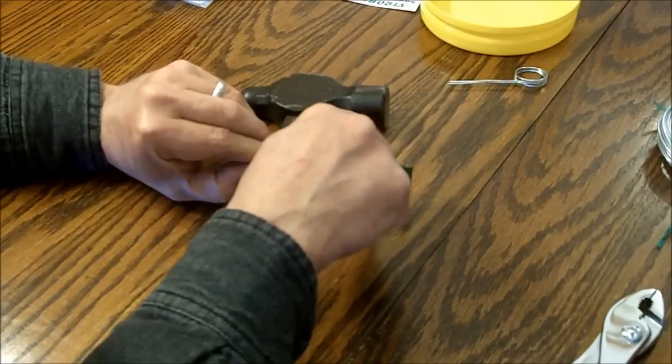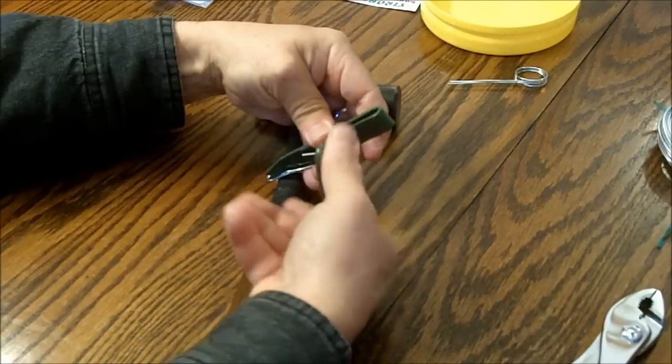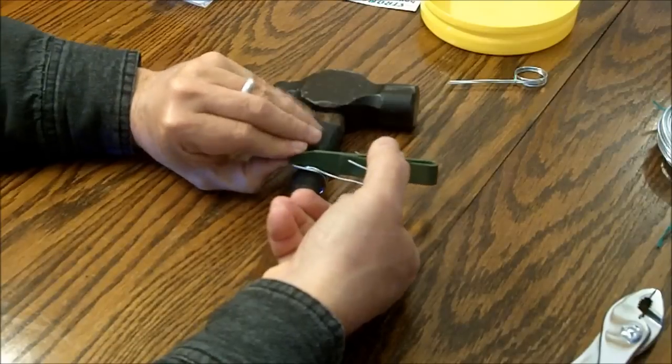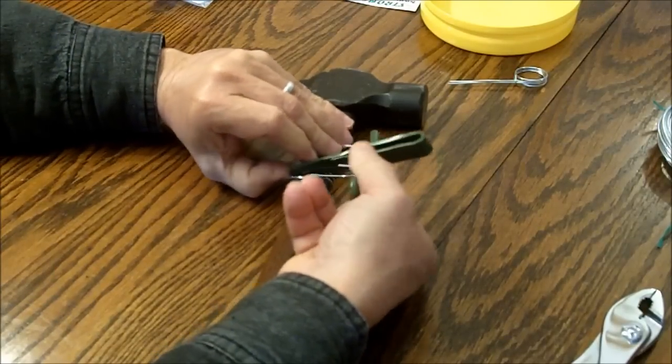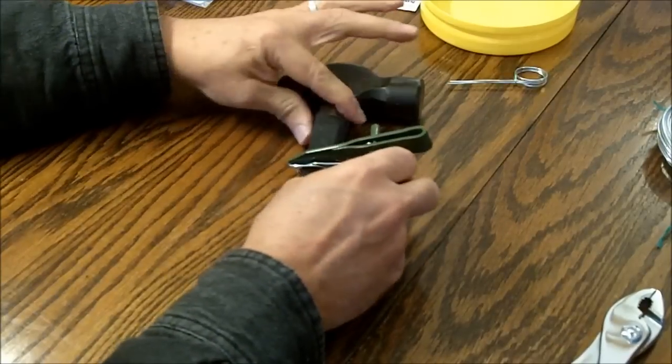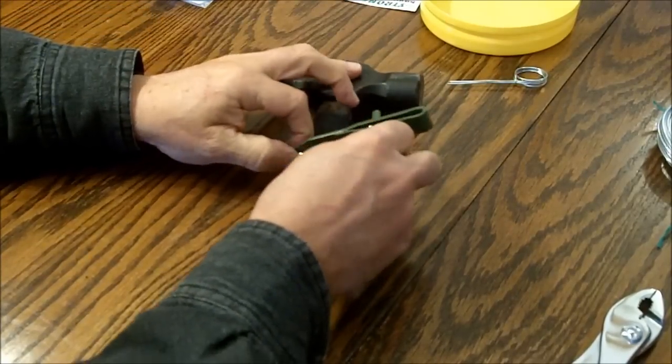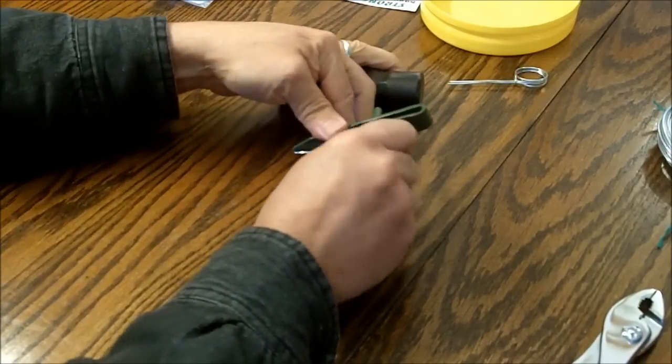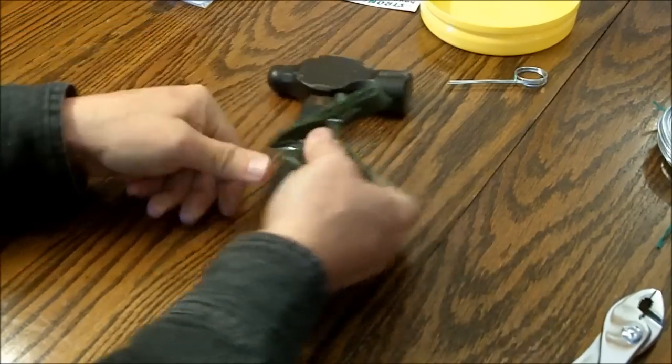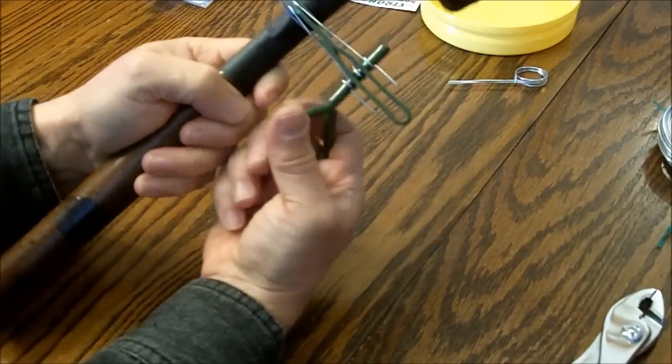Put the little notch on the loop like so. Tighten it down. Position it at where my crack is. Then tighten it down.